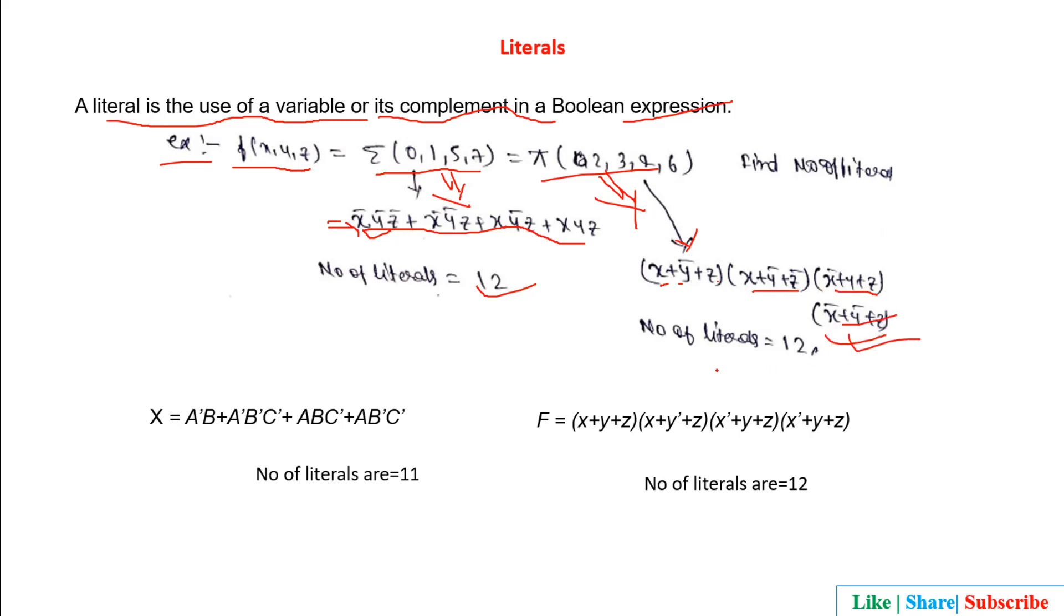This is another example. In this section, you see total number of variables in the complement form or not are three, three, six, nine, to eleven. So here the number of literals are eleven.